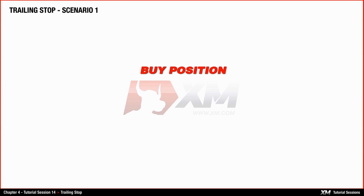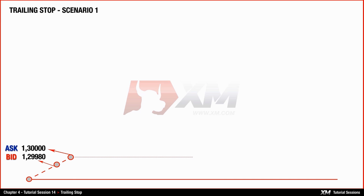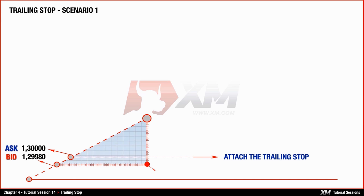Now let's see how this works on a buy position. The trailing stop must be set at least at the stop limit level distance from the current price. It's important to know that just like stop loss or take profit, the trailing stop must be set at the current price and not at the open price of the order. Therefore, it should be attached to the order while your position is making a profit, or at least breaking even.